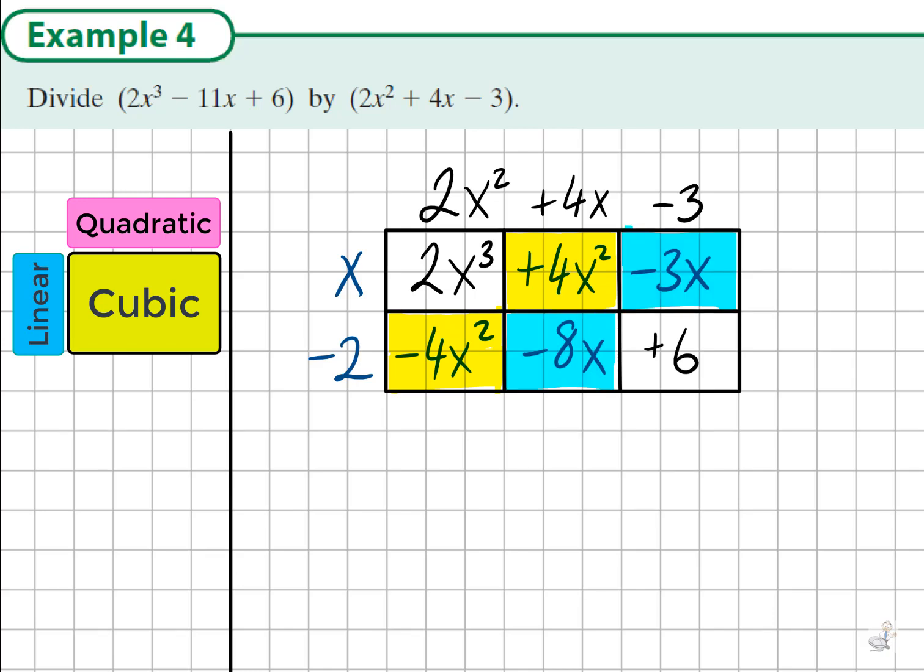And when we add negative 8x and negative 3x, we get negative 11x, which is the same as in the cubic. So this shows that our division is correct.